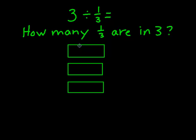Then we'll cut them into thirds. Then we'll count all the thirds to see how many that we have. And we can see that we have 9 thirds. So 3 divided by 1 third equals 9.